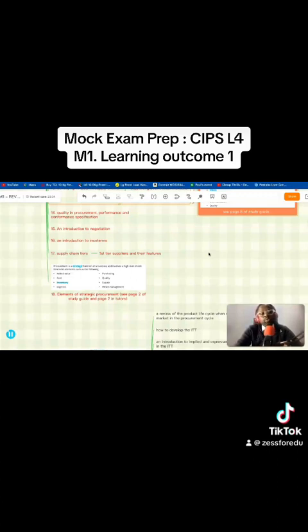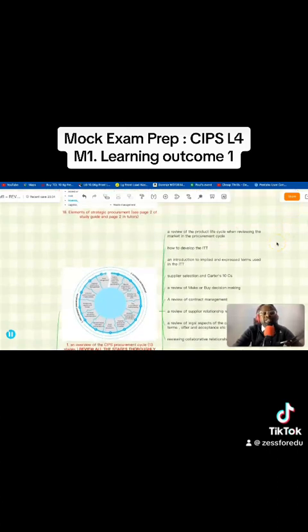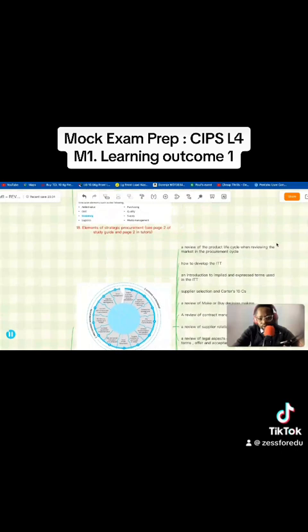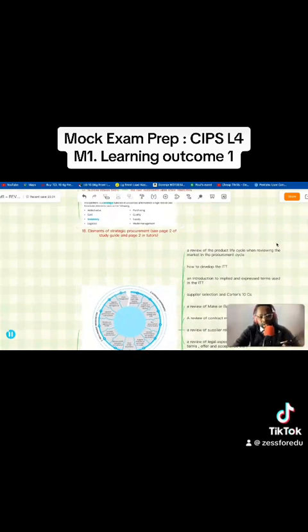And eighteen, final area I've identified: elements of strategic procurement. This is also in your study guide and in your tutor notes as well, where you are introduced to the following - added value, cost, inventory, logistics, purchasing, quality, supply, and waste management.